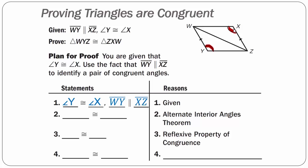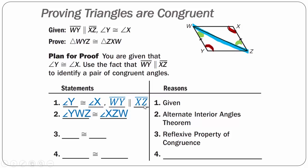Plan for proof: we are given that angle Y is congruent to angle X and line segment WY is parallel to line segment XZ. Since I have parallel lines, I can say that angle YWZ is congruent to angle XZW using the Alternate Interior Angles Theorem — notice that forms a Z shape. Line segment WZ is shared by triangles WYZ and ZXW, so line segment WZ is congruent to line segment WZ by the Reflexive Property of Congruence.